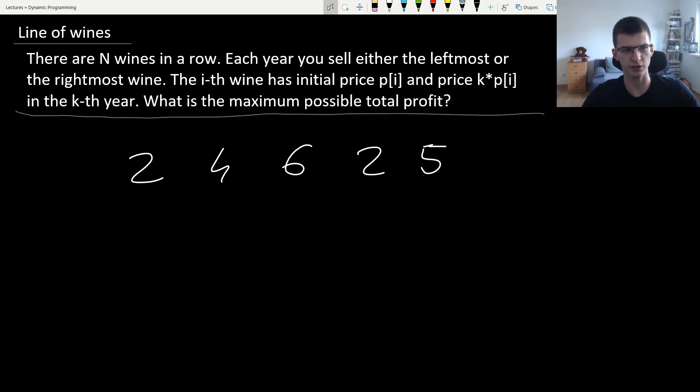The problem is line of wines. There are N wines in a row. Each year you sell either the leftmost or the rightmost wine, and the i-th wine has initial price P[i], but if you sell it on the k-th year, the price will be k times P[i], because older wine is more expensive. You should choose which wines to sell, each time leftmost or rightmost, in order to maximize the total money you will get from sales.